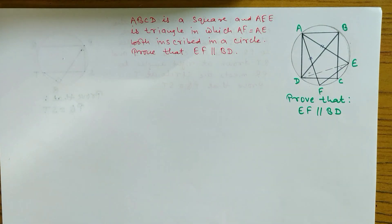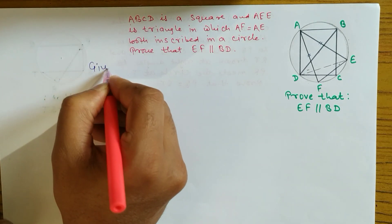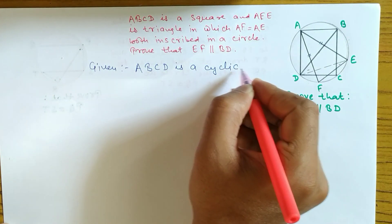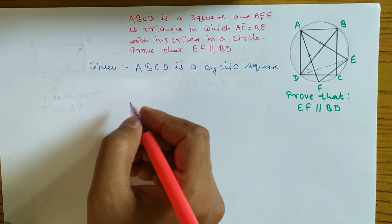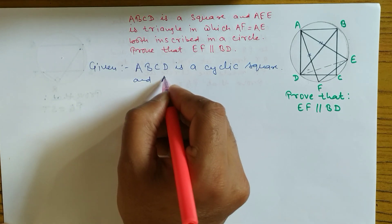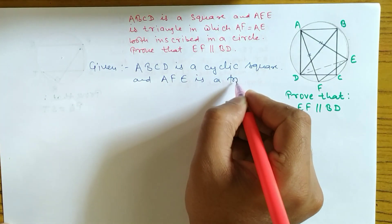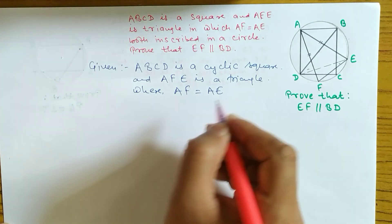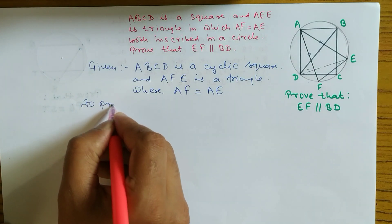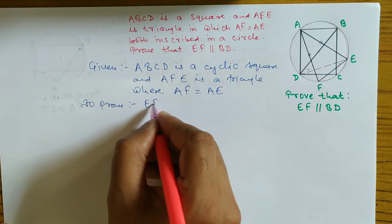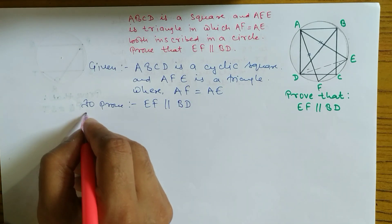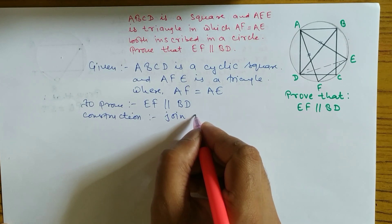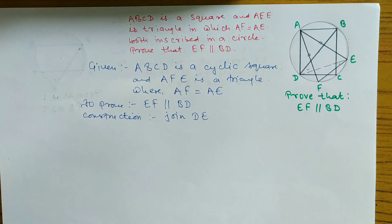Given: ABCD is a cyclic square inscribed in a circle. AFE is a triangle where AF and AE are both equal. To prove: EF is parallel to BD. Construction: Join DE. We will draw a table showing statements and reasons.